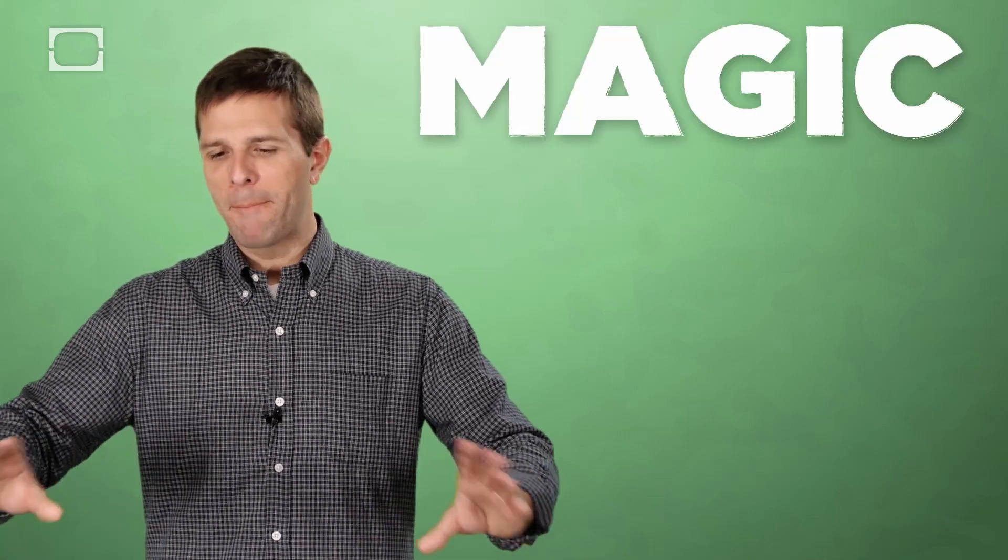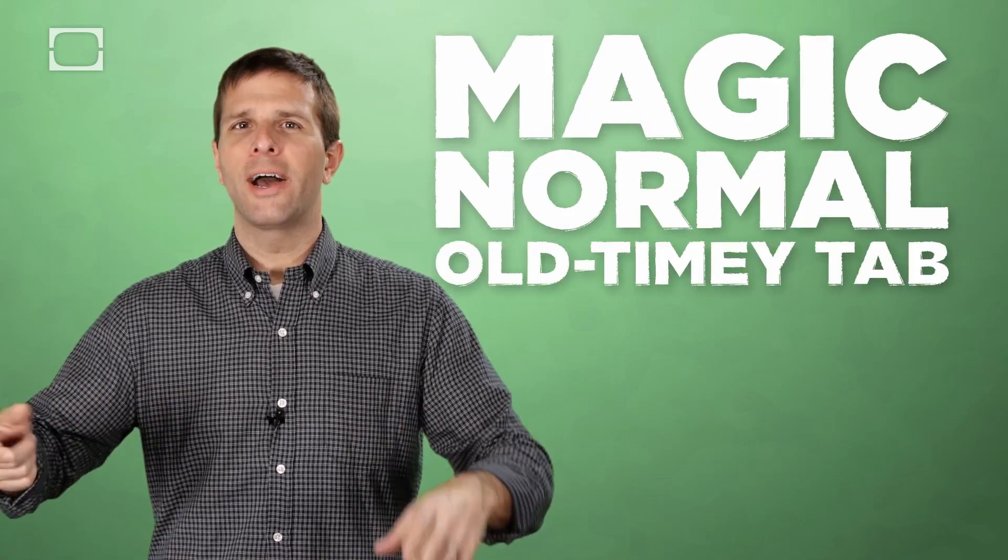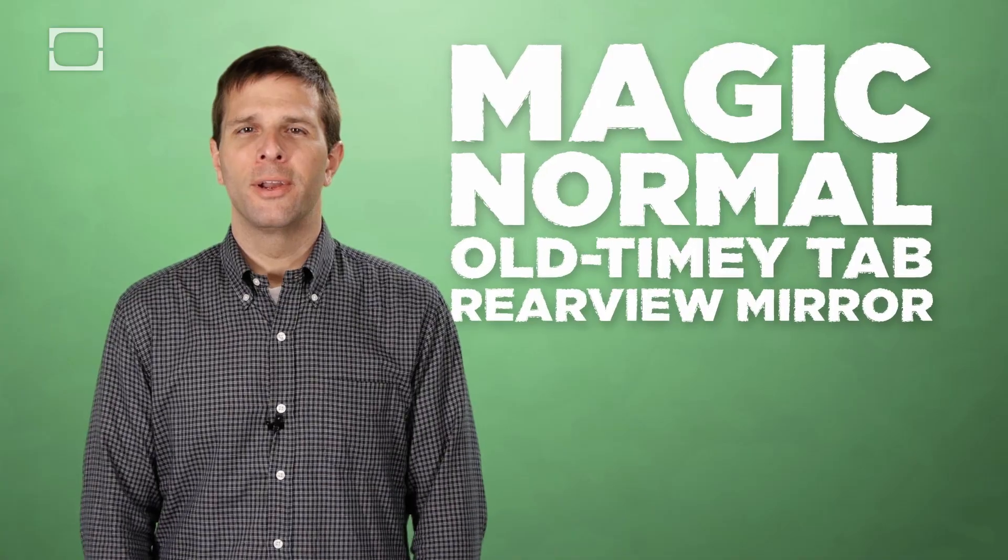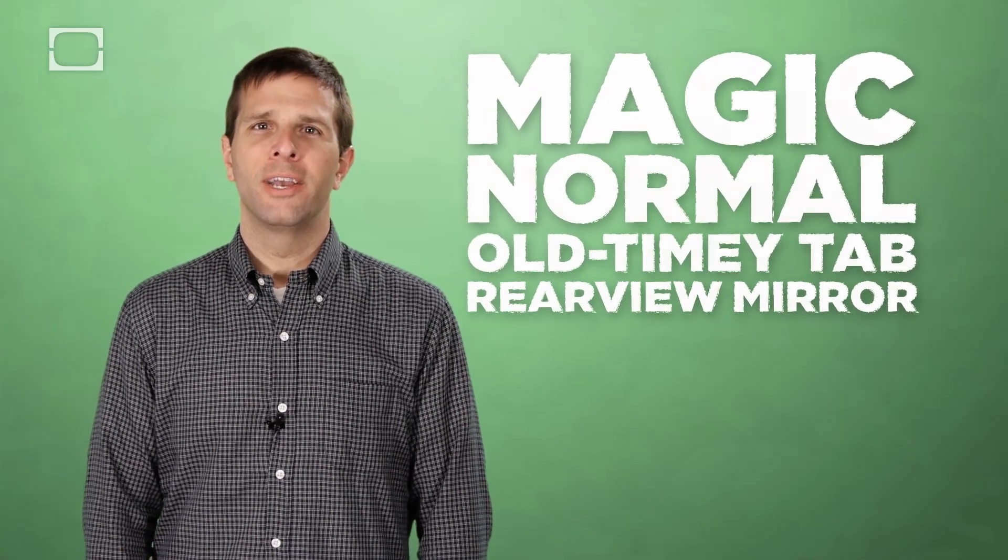Now there are some fancy schmancy new mirrors that use electrochromic technology that employs a low-voltage electrical current to go through the glass and actually physically tint it. That's a whole other can of worms altogether. All I'm talking about is that magic, normal, old-timey tab rearview mirror that does some pretty cool stuff, considering how easily you take it for granted.